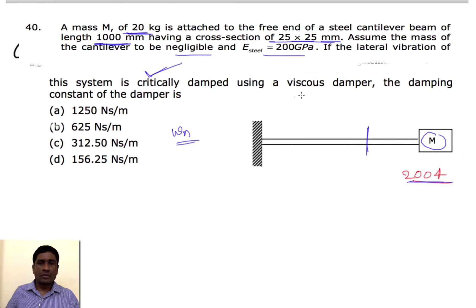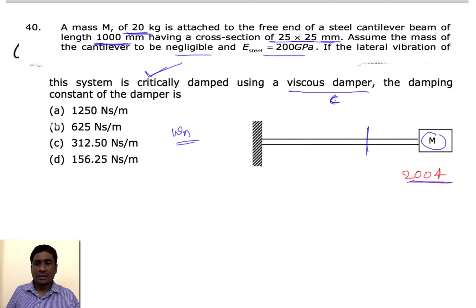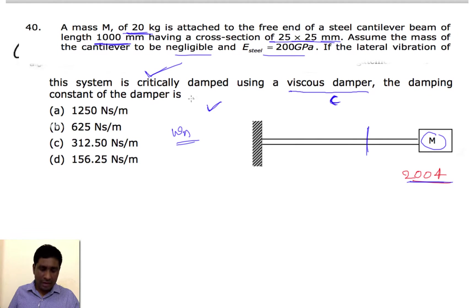We are asked to find the viscous damping coefficient cc for this system. When it is critically damped, c equals cc, so we need to find cc. The formula is cc = 2m·ωn, so we first need to find ωn.